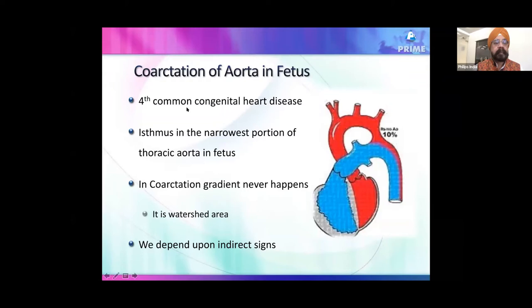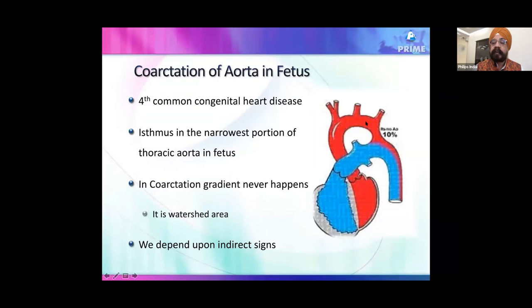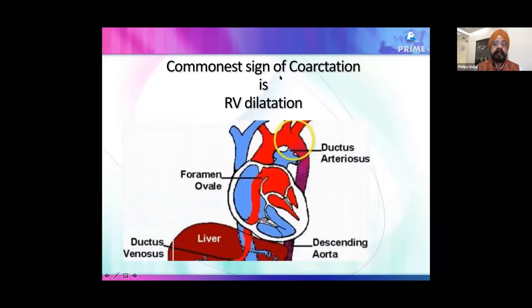If you look for a narrow isthmus like you do in adult or neonatal coarctation, you won't find it — the isthmus is the narrowest part of the fetal arch even normally. The coarctation area is a watershed zone: the ductus arteriosus brings blood from the pulmonary artery to the descending aorta, while the aorta supplies the cerebral circulation. So there is virtually no blood flowing across the coarct segment and thus no gradient.